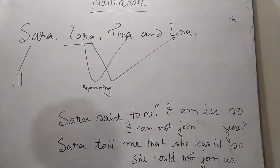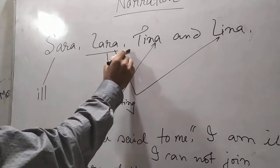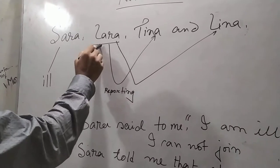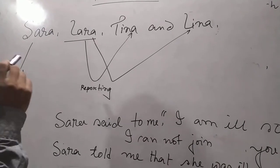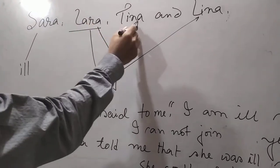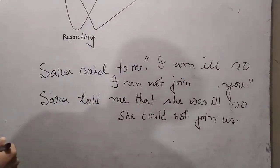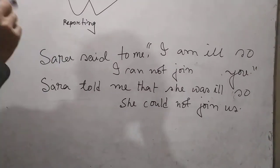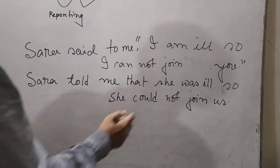Now, dear students, Sarah, Jara, Tina and Lina are best friends. They decided to go shopping. Unfortunately, Sarah fell ill. So Jara, Tina and Lina went shopping. The reason for Sarah's absence is described by Jara to Tina and Lina: Sarah said to me, 'I am ill, so I cannot join you.' This message is also reported to Lina as: Sarah told me that she was ill, so she could not join us.